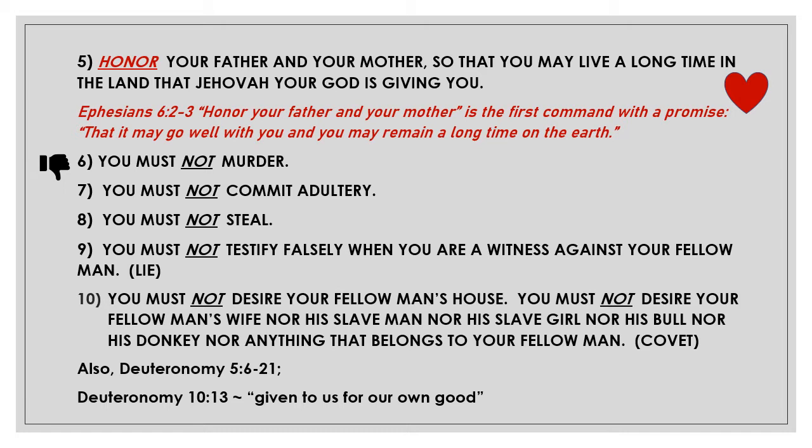Number nine: you must not testify falsely when you are a witness against your fellow man — or you must not lie. Number ten: you must not desire your fellow man's house, his wife, his slave man, his slave girl, his bull, his donkey, nor anything that belongs to your fellow man. You must not covet things that do not belong to you. The Ten Commandments are also listed at Deuteronomy 5:6-21, and Deuteronomy 10:13 tells us that he gave us these commandments for our own good.